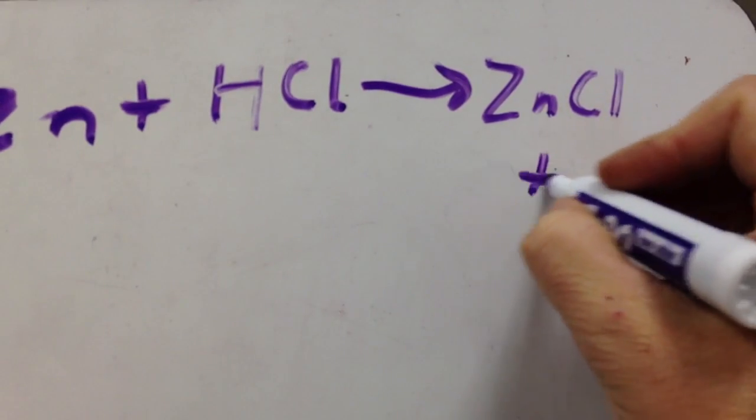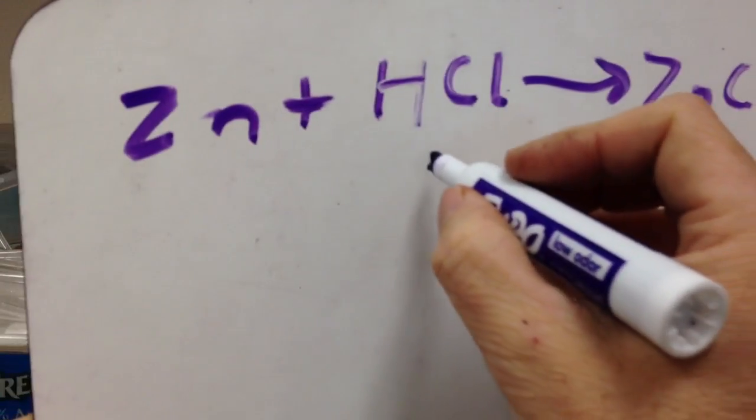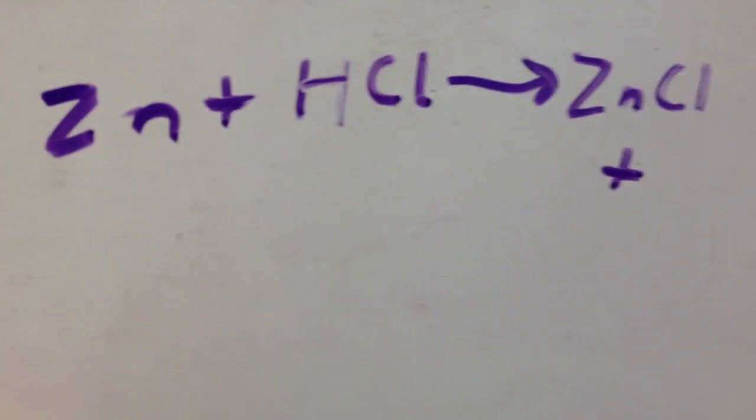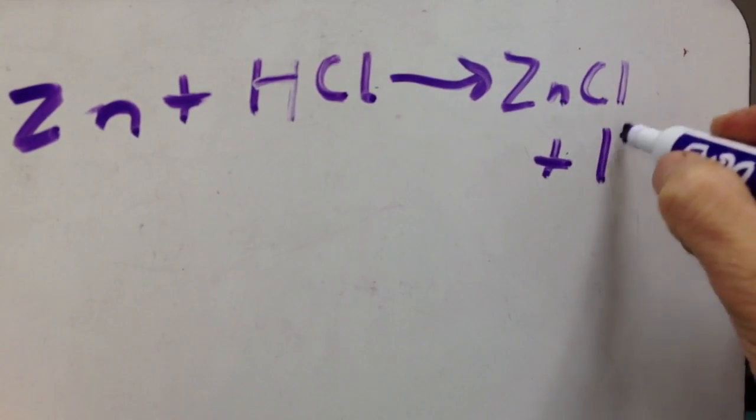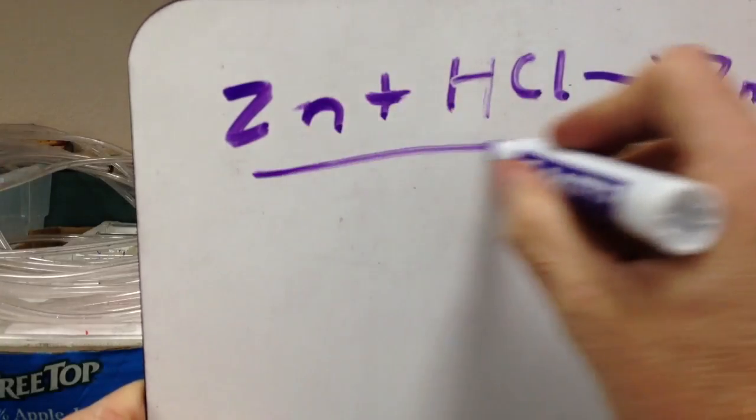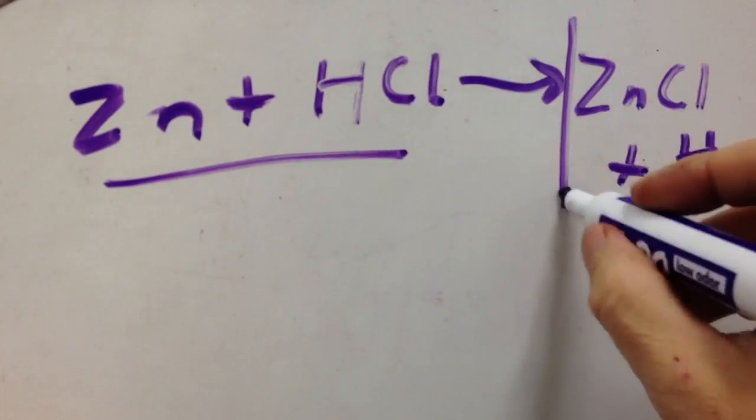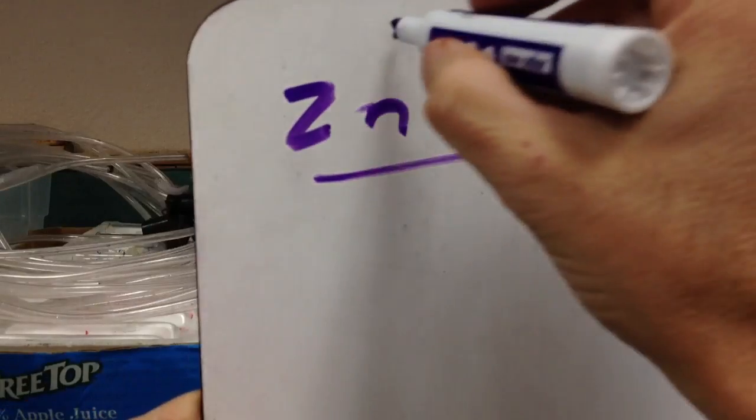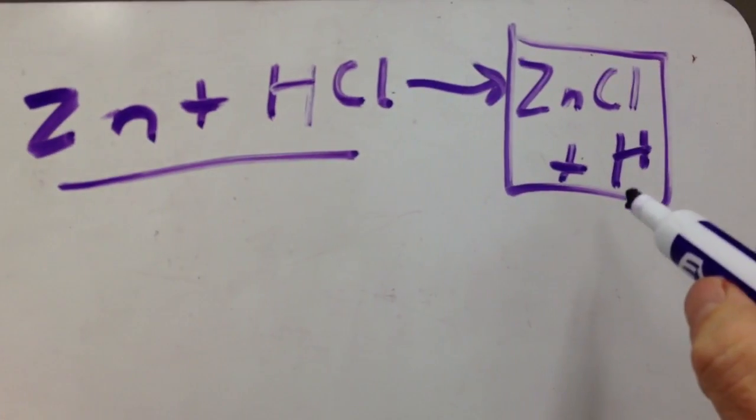It also generated, it freed up this hydrogen over here. So, it generated hydrogen gas. Okay. Notice all the stuff I have on the left side. I also have on the right side. These are called the reactants. These are called the products.